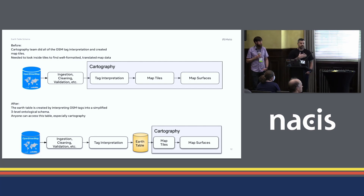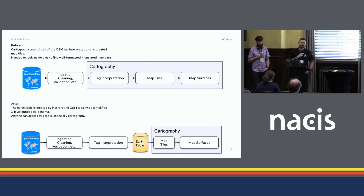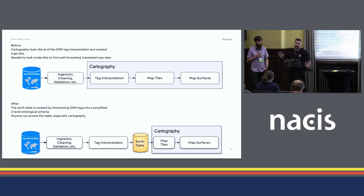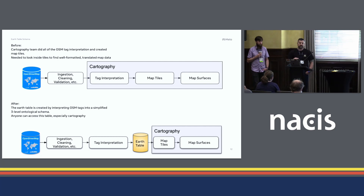On the cartography side, we build vector tiles at a global scale. To build vector tiles, you want to simplify all the data down as much as you can — not just geometry-wise, but all the attributes. You want it really simple so the tiles can perform well and you can easily symbolize things without complex style logic. All of that tag interpretation happened on the cartography team. We had complex logic that said it's a national park in America if it has these 12 combinations, and in Brazil if it has these combinations — because in OSM, there's not a set way to do everything across the world.